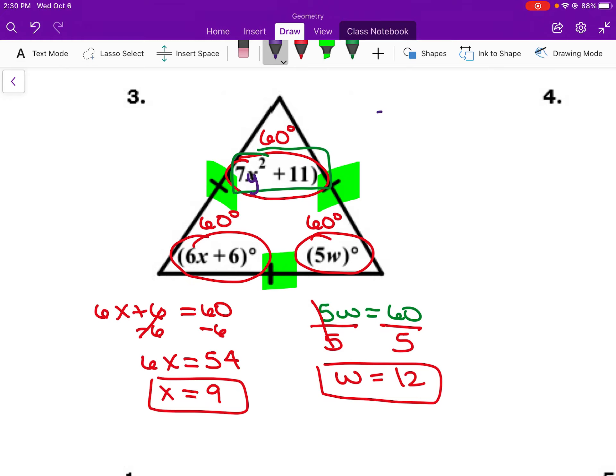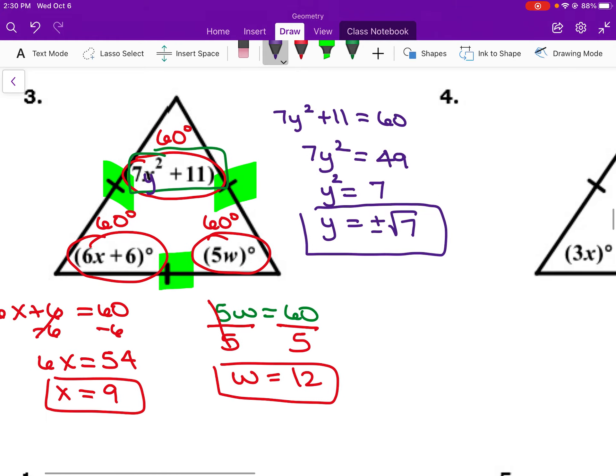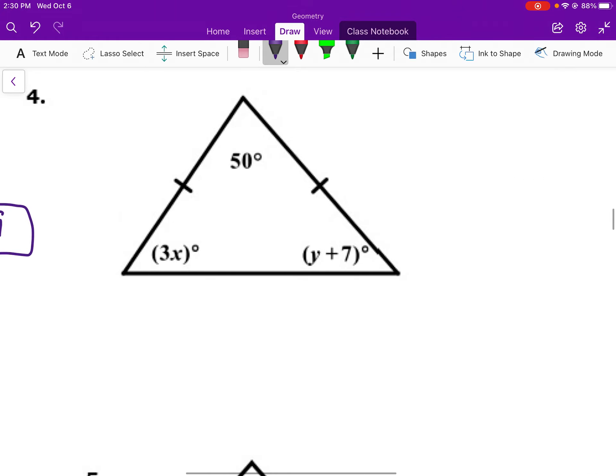Here, if I divide both sides by 5, I find that w equals 12. And really, how this was written, this should be a different variable, guys. That's why I was pausing. This should be like a y or something. So let's just go ahead and change it now. So 7y squared plus 11 equals 60 also. And so if I solve by subtracting 11 from both sides, get 7y squared equals 49. Divide both sides by 7, we get y squared equals 7. Square root both sides, we get y equals positive or negative square root of 7. And so I have all three variables defined here.